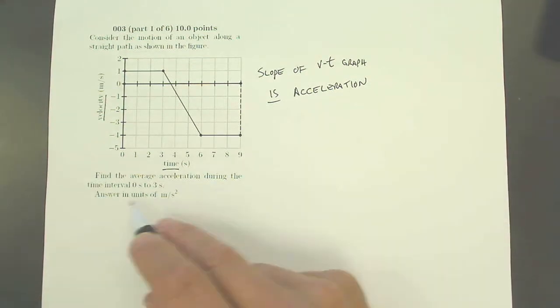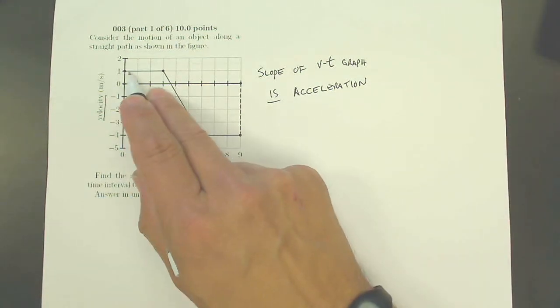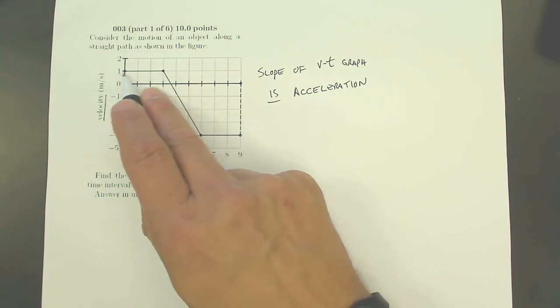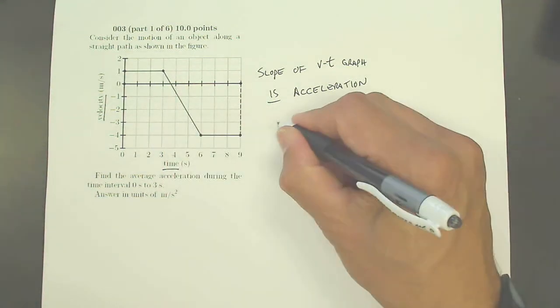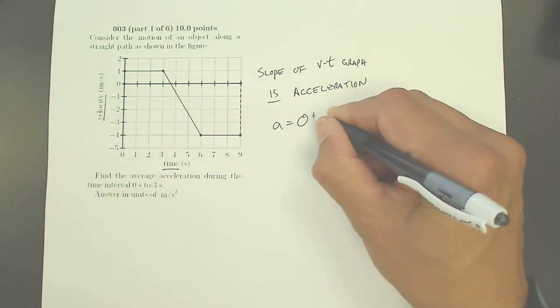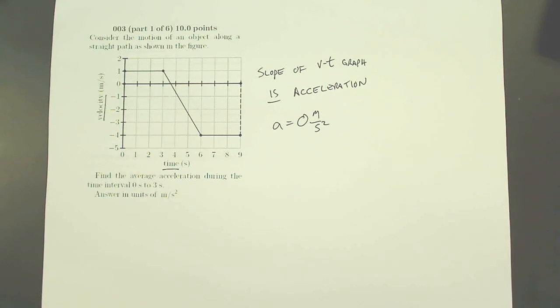In this case the slope from 0 to 3 seconds is just a straight line, so all I have to do is find the slope of that line. Now just looking at that, can you tell the slope? Sure looks like a zero slope, so I know that my acceleration is going to be 0 meters per second squared because that is a flat line and flat lines have zero slope.